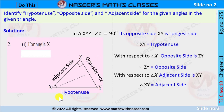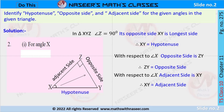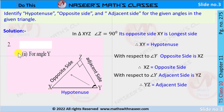In triangle XYZ, angle Z equals 90 degrees. Its opposite side XY is the longest side, therefore XY is the hypotenuse. With respect to angle X, YZ is the opposite side, and XZ is the adjacent side.